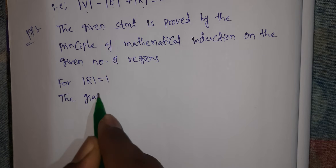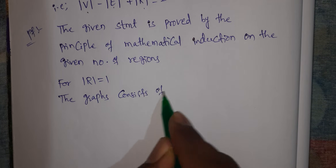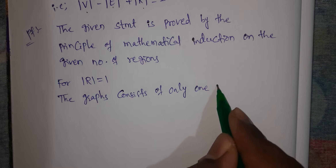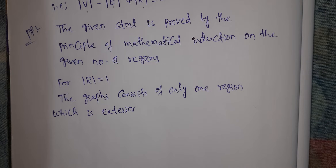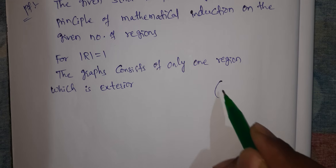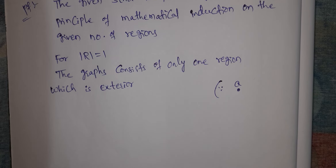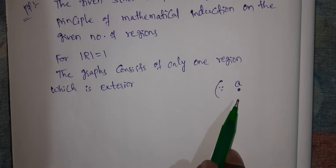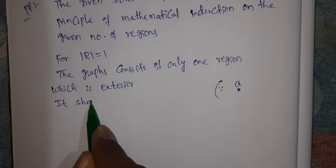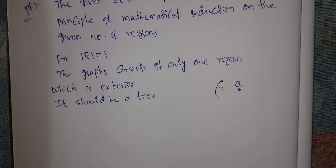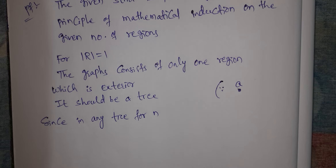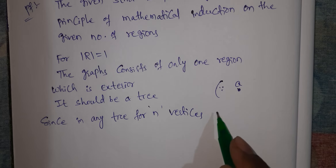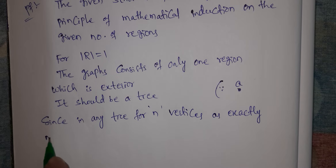The graph consists of only one region, which is the exterior. The graph consists of a single tree. In any tree, for n vertices, there are exactly n minus 1 edges.